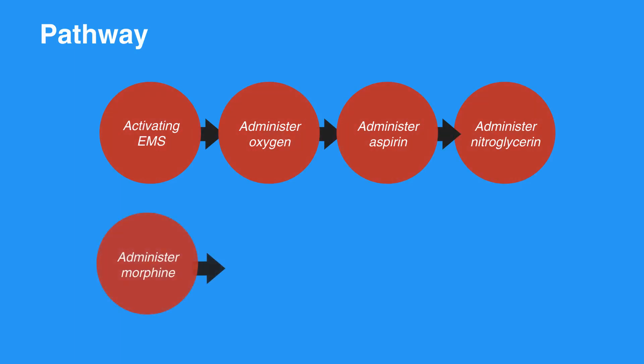Administer morphine: give 1 to 5 milligrams intravenously only if symptoms are not relieved by nitrates or if symptoms recur. Monitor blood pressure closely.